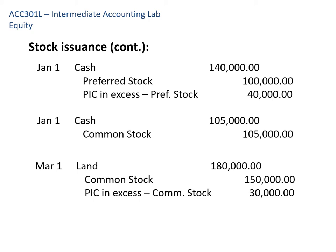The second transaction has no par value associated with it, so there is no such thing as paid in capital in excess. In this case, when we issue 5,000 shares at $21 per share, we receive $105,000 in cash and we increase common stock by that full amount.